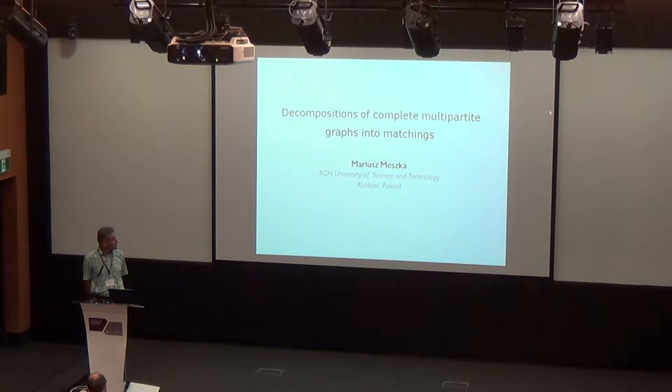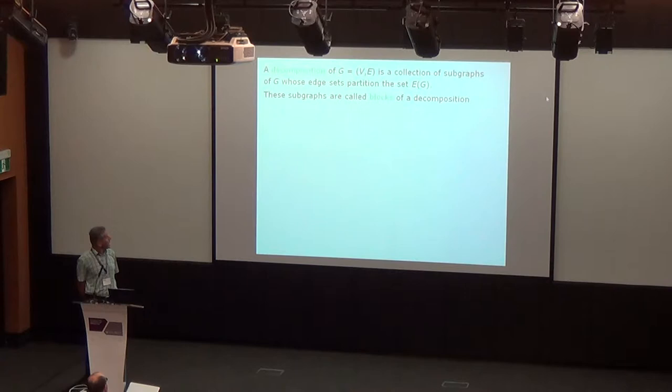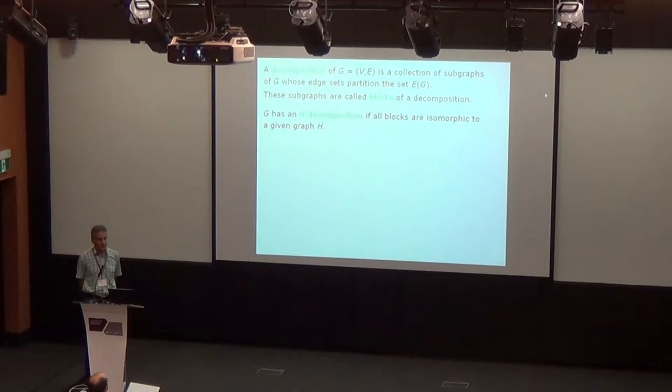Let me briefly review some basic definitions. A decomposition of a graph is a partition of the edge set of that graph in such a way that every edge of the graph is contained in exactly one block of the decomposition. When we are talking about decompositions into pairwise isomorphic blocks, and H represents the block, then we say that this is an H-decomposition.